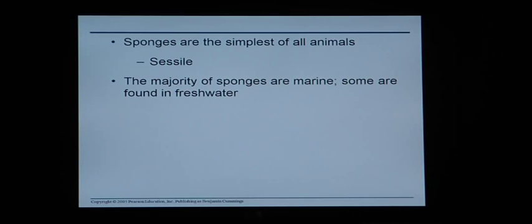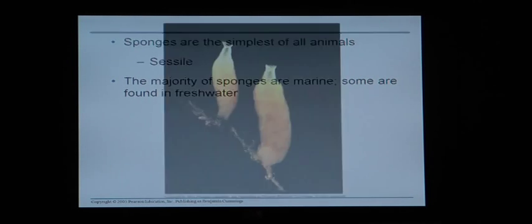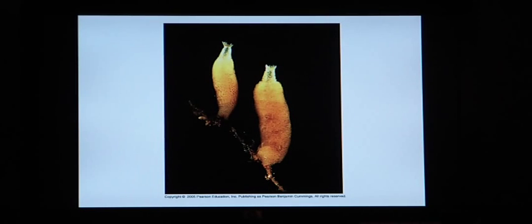Sponges are the simplest of all animals. They are sessile — a fancy word for stationary; they don't move, they stay where they are. The majority of sponges are marine, meaning they live in the ocean or salt water, though some are found in fresh water. This is a picture of a type of sponge.